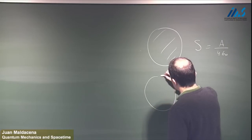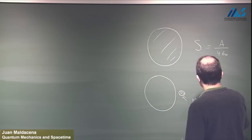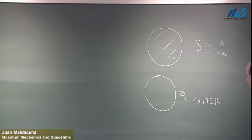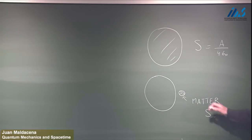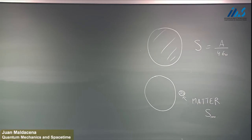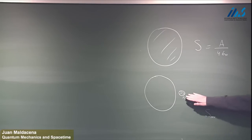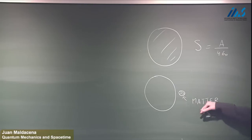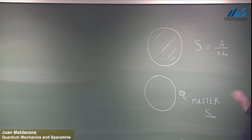Imagine that we have a black hole and we have some matter outside. This matter has some entropy. If we take this matter and throw it into the black hole, initially we have the black hole with some matter, and in the end we have a final black hole with no matter outside. It looks like the entropy of the matter has disappeared — it was initially here and it's not there in the final black hole. At first sight, it looks like we are violating the second law of thermodynamics, because the entropy of this matter has disappeared behind the black hole horizon.